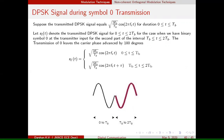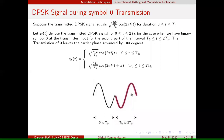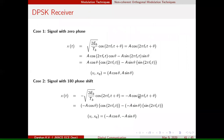This holds for symbol 1 transmission as well. During the first time interval, the phase is 0, and during the second time interval, the phase is also 0 — so both are in phase. During symbol 0 transmission, you have a waveform with phase 0 in one interval and a waveform with 180 degree phase shift in the next. Those are the two possible cases.